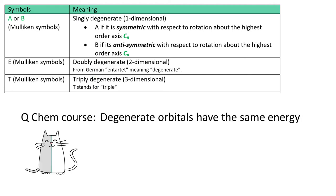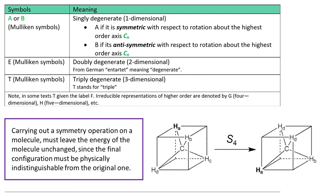You have heard the term degenerate during quantum chemistry course. When the two orbitals have the same energy, they are said to be degenerate. So let's first realize that carrying out the symmetry operation in a molecule must leave the energy of the molecule unchanged, since the final configuration must be physically indistinguishable from the original one.